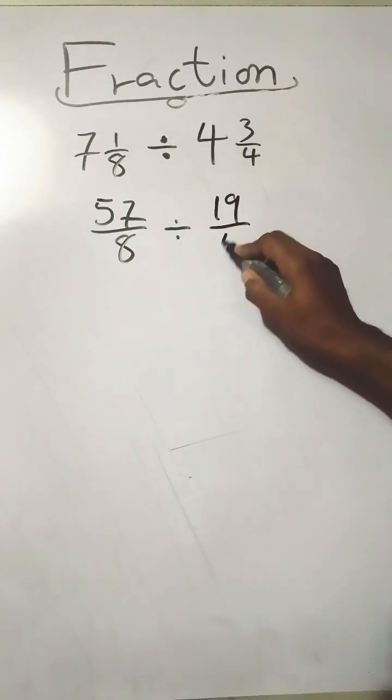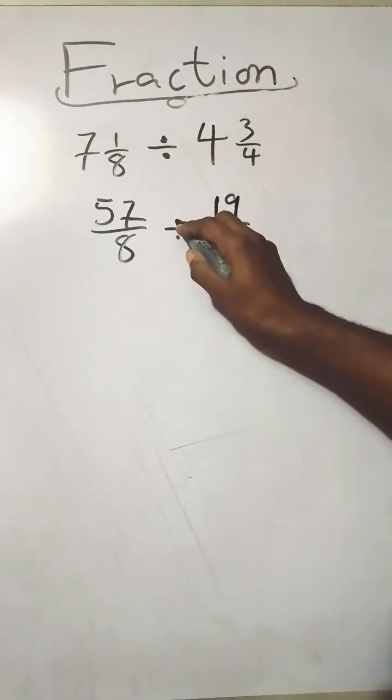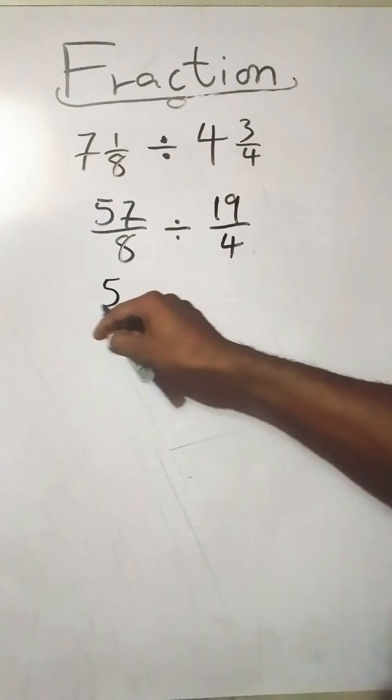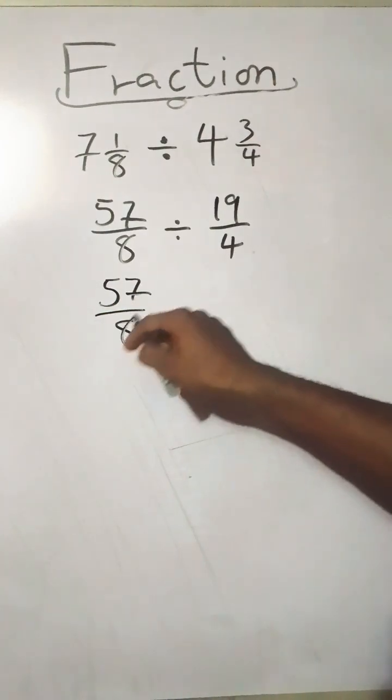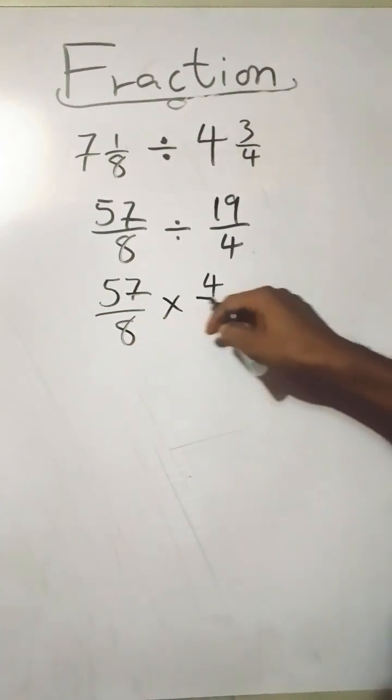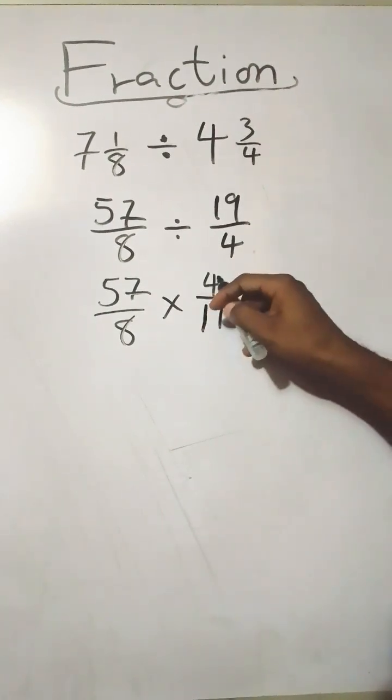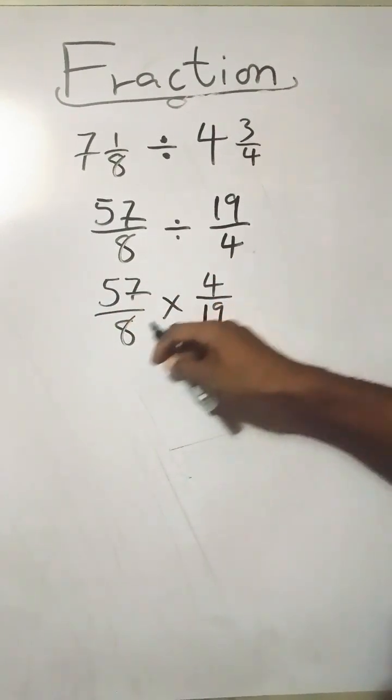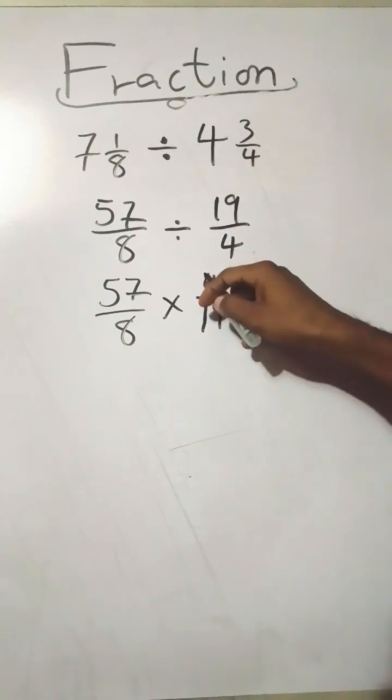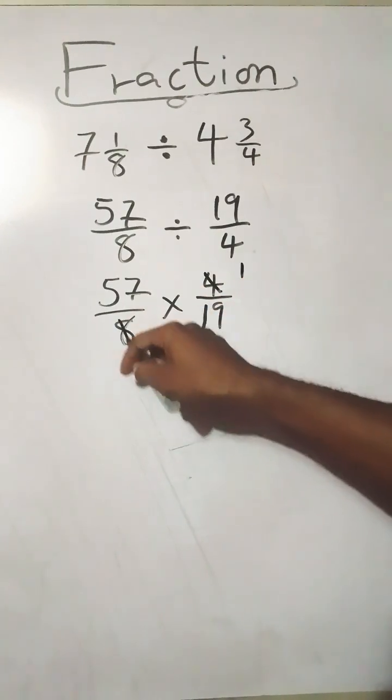Now when dividing fractions, the division becomes multiplication by taking the reciprocal of 19 over 4. Here we go. Now inspect the numerators and denominators - 4 goes into 8 twice.